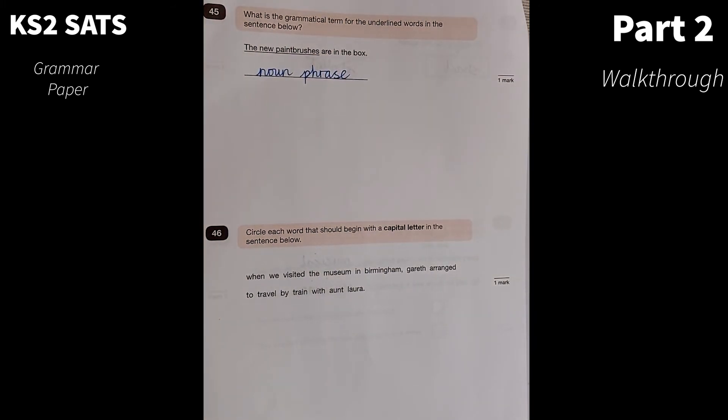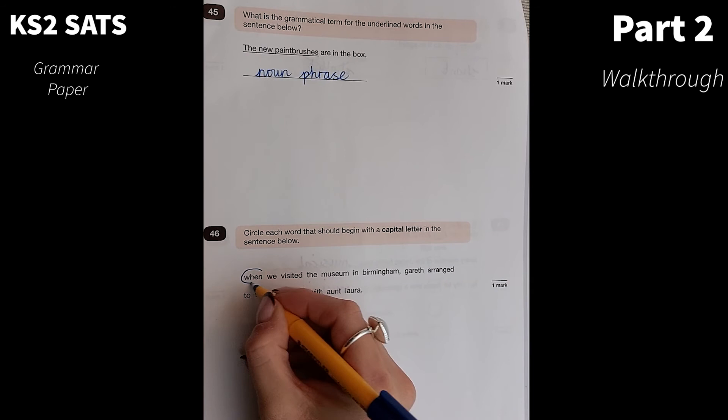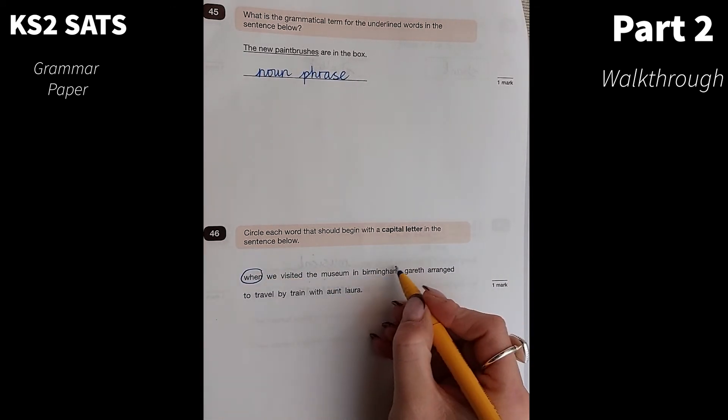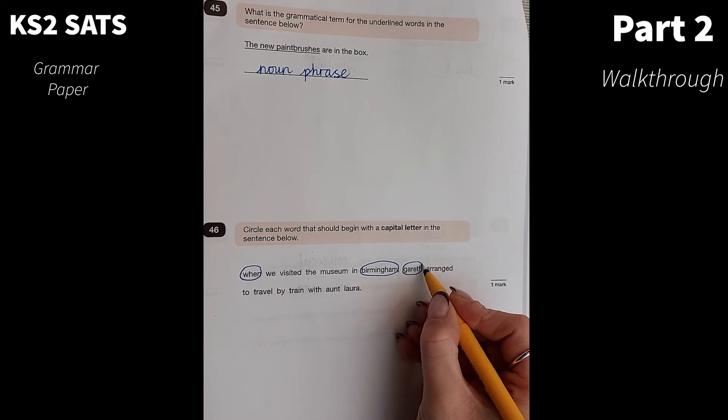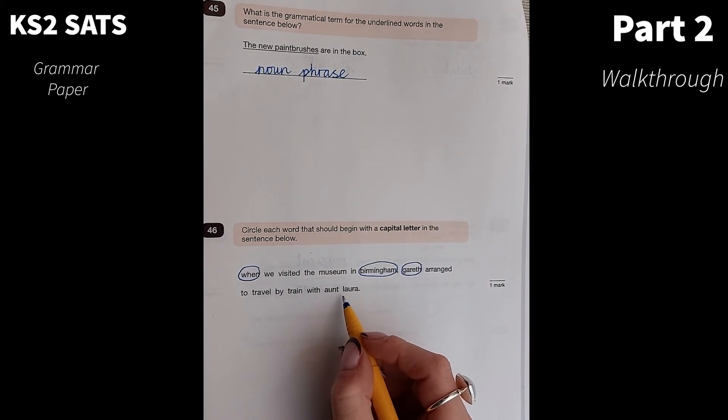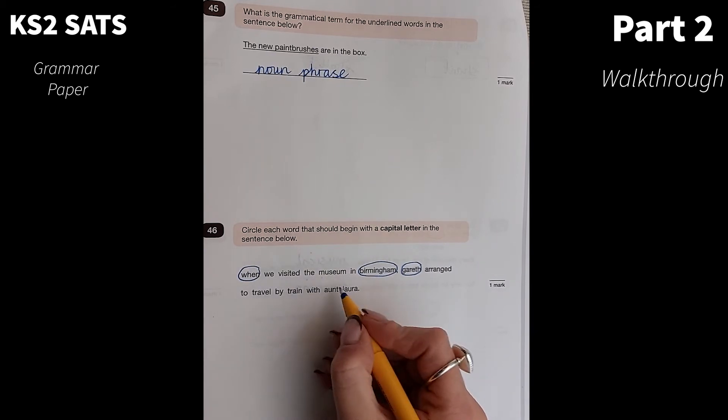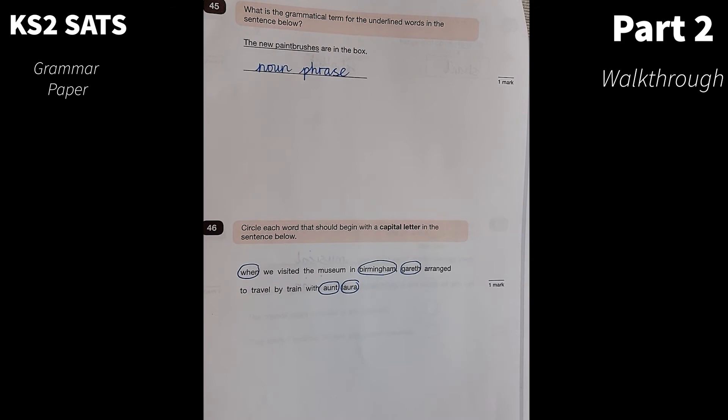Number 46. Circle each word that should begin with a capital letter in the sentence below. I know that when should start with a capital letter because that's the beginning of a sentence. Birmingham, because it is the name of a city. Gareth, because it's the name of a person. The thing here that throws some children is not putting a capital for aunt. You need a capital for aunt and a capital for Laura.